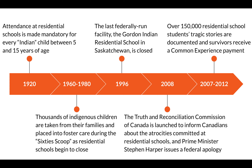In 2008, the Truth and Reconciliation Commission of Canada is launched to inform Canadians about the atrocities committed at residential schools, and Prime Minister Stephen Harper issues a federal apology. From 2007 to 2012, over 150,000 residential school students' tragic stories are documented and survivors receive a common experience payment.